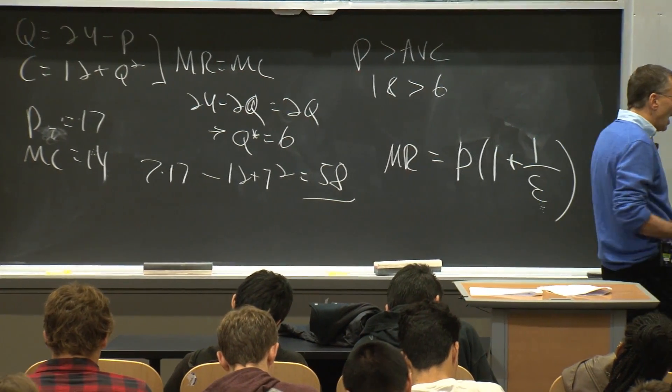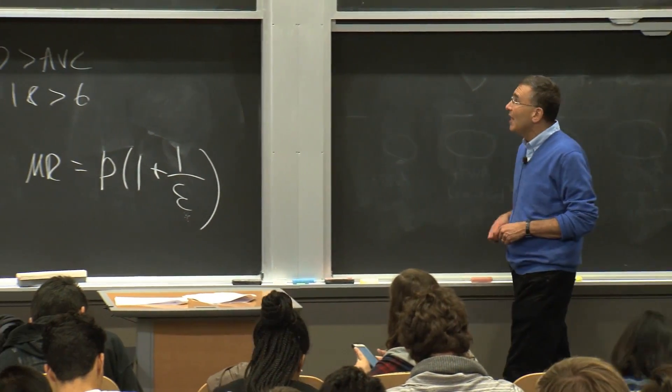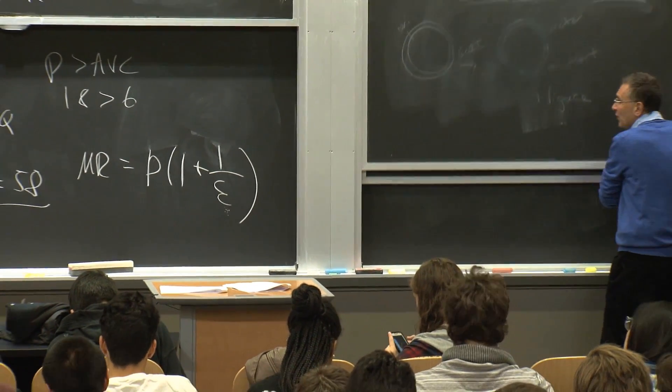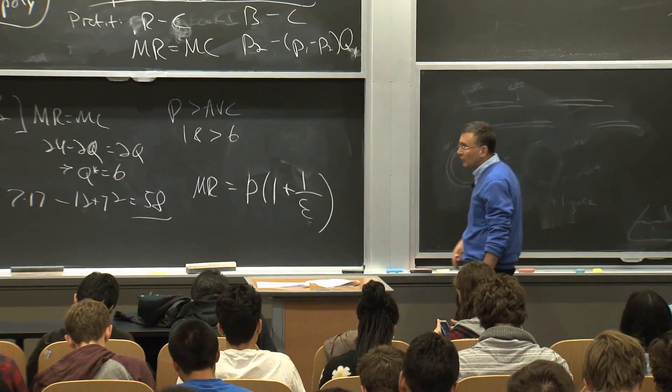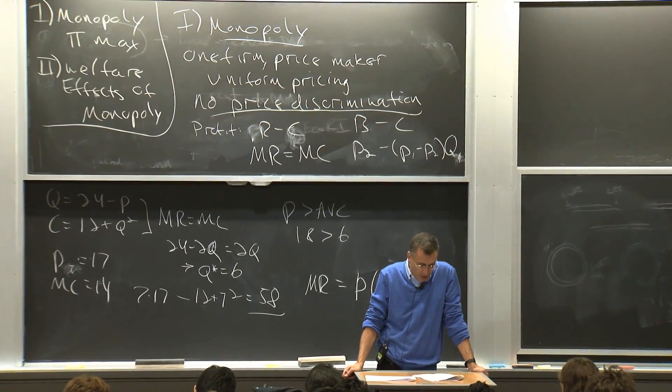So the bottom line is the monopolist maximizes profits by setting marginal revenue equal to marginal cost. That is not price. That is marginal revenue. And that will result in the monopolist producing fewer units and not producing units even though his marginal cost is below the market price.